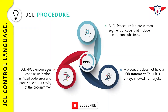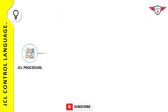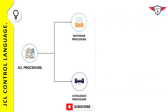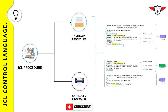Now let's talk about the different categories of JCL procedures. In general, a JCL PROC is divided into two categories: the first is in-stream procedures and the second is catalog procedures.